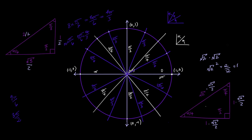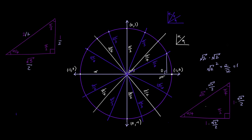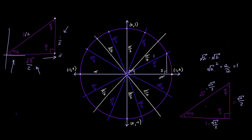Now we take all the points where the lines intersect the circle and drop perpendiculars down to the x-axis, forming right triangles. For the first one at pi over 6, we use the 30-60-90 morphed triangle with hypotenuse 1. To reach that point we go right by root 3 over 2 and up by 1/2. So the coordinate is (root 3 over 2, 1/2).